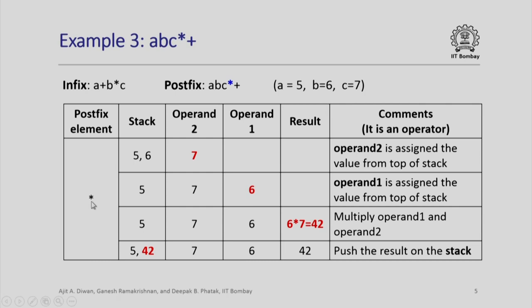The next character we look at is star. Star is an operator. By our logic, whenever we encounter an operator we have to take the top two operands from the stack. Currently the stack contains three values: values of a, b, and c. Out of these we will take the top value, which is 7, and assign it to operand 2. Then we will take the value 6 and put it in operand 1. Operand 2 and operand 1 are assigned the values of the two top operands available on the stack. Once this is done we calculate 6 multiplied by 7, giving us the result 42. This result is pushed on the stack. Note that 5 was already on the stack; now 42 gets added, so currently on the stack we have two values, 5 and 42.